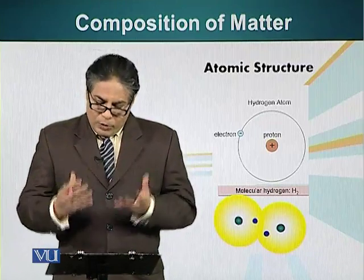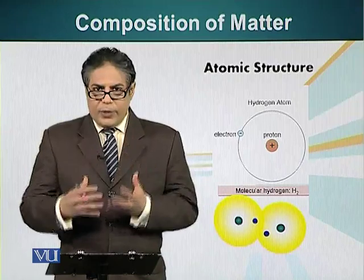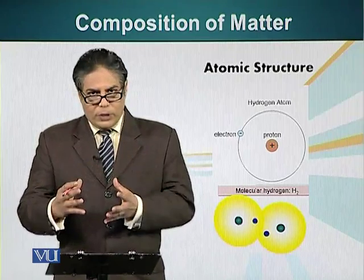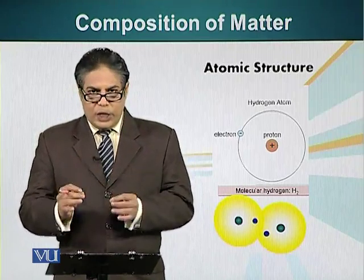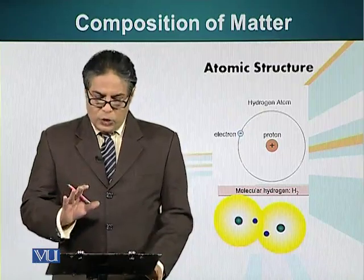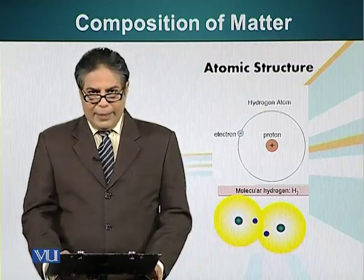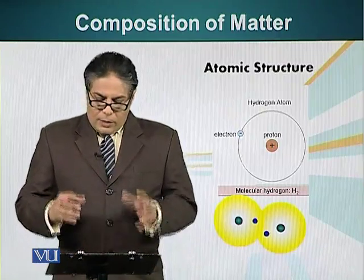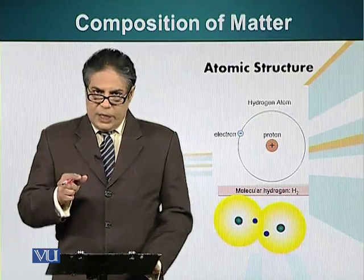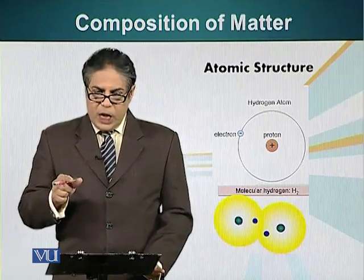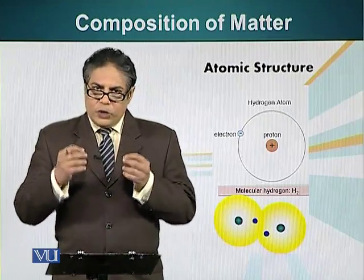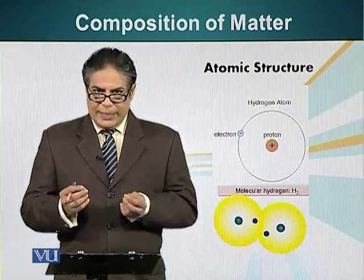Hydrogen atoms don't exist as single atoms — they like to form bonds, which allows them to share electrons with other atoms. Let's look at two hydrogen atoms forming a bond between them. Two hydrogen atoms can come close together and share an electron each. When they are sharing these electrons, there are two electrons present in the orbital.